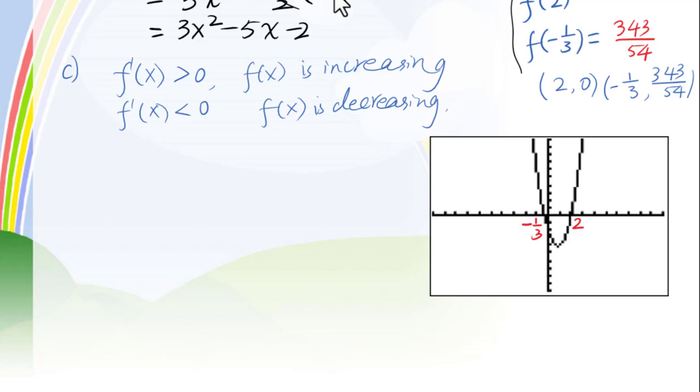So on the left side of negative 1 over 3 is positive, because the graph is above x axis. Between negative 1 over 3 and 2 is negative, because the graph is below x axis. When x greater than 2, the graph is above x axis, is positive.